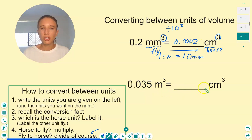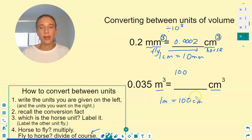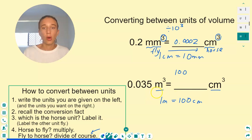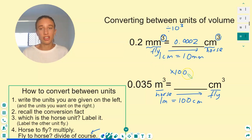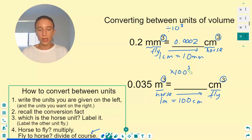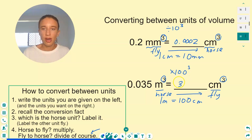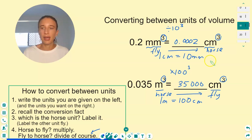Now meters cubed to centimeters cubed. Meters to centimeters — one meter is 100 centimeters, that's our conversion factor. What's bigger, one meter or one centimeter? One meter, which means that's the horse unit. Horse to fly, multiply. And since we're dealing with cubed units, we must also cube the conversion factor. So 0.035 times 100 cubed gives 35,000 centimeters cubed.